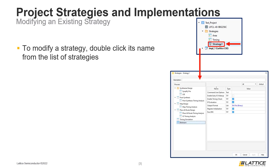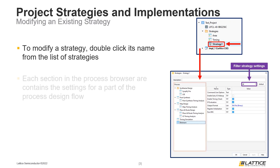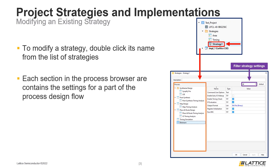This window contains all of the settings that can be modified for the selected strategy. To filter out less commonly modified settings, click the drop-down at the top of the window and select Frequent. This will make only the most frequently modified strategy settings visible; all other settings will retain their default values. On the left side of the strategy settings window is the process browser, which contains all the different strategy-related settings for different parts of the process design flow.